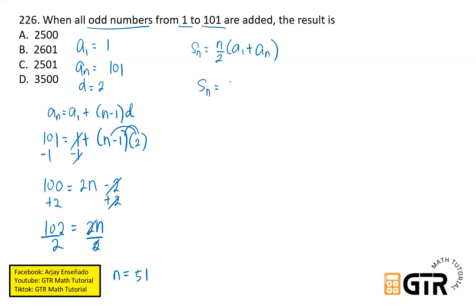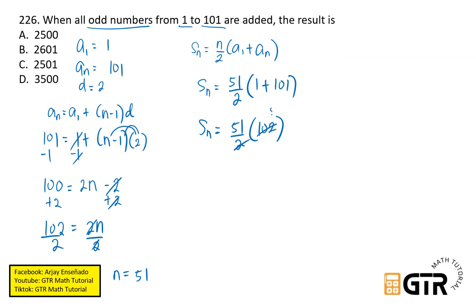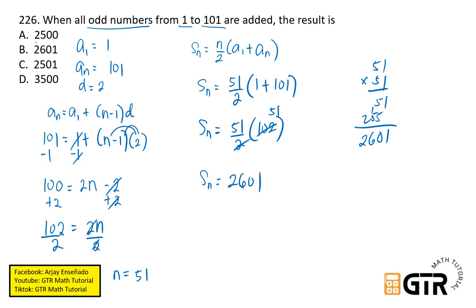Now substitute n equals 51 into our formula. S sub n equals 51 over 2 times (1 plus 101), which is 51 over 2 times 102. Dividing 102 by 2 gives 51, so we have 51 times 51. That is 2,601. The correct answer is letter B, 2,601.